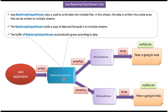Hi, in this video tutorial I will cover using ByteArrayOutputStream, how to write data to multiple files. A Java application can use ByteArrayOutputStream to write data to multiple files. ByteArrayOutputStream holds a copy of the data and forwards the data to multiple streams.